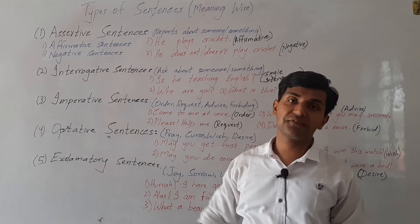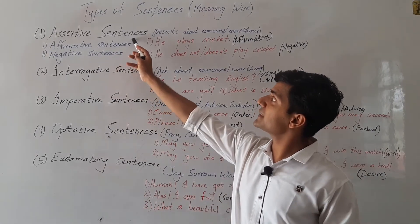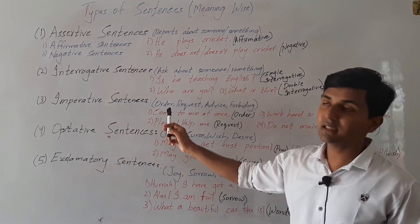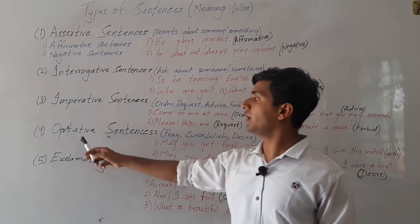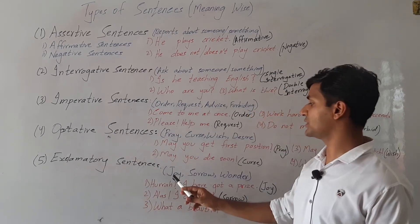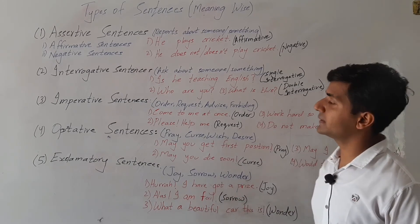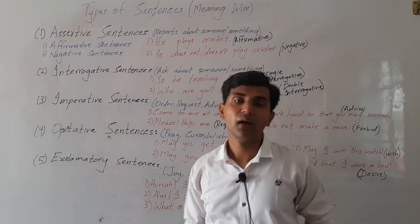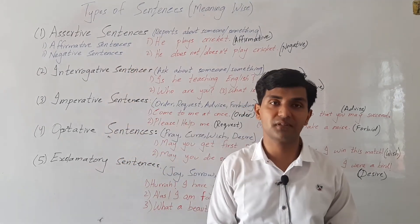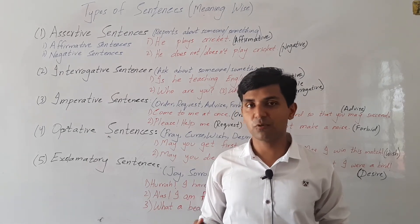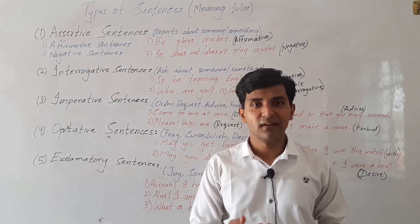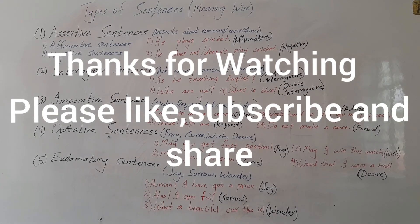So it's quite clear from today's lecture that there are five types of sentences meaning-wise: assertive sentences that report about someone or something; interrogative sentences that ask about someone or something; imperative sentences that tell us about order, request, advice, and forbidding; optative sentences that tell us about prayer, curse, wish, or desire; and exclamatory sentences that tell us about joy, sorrow, and wonder. I hope dear friends you have understood this lecture very well. If you are new on my channel, please subscribe, like this video and share it with your friends. We meet you in the next lecture — goodbye dear friends, thank you.